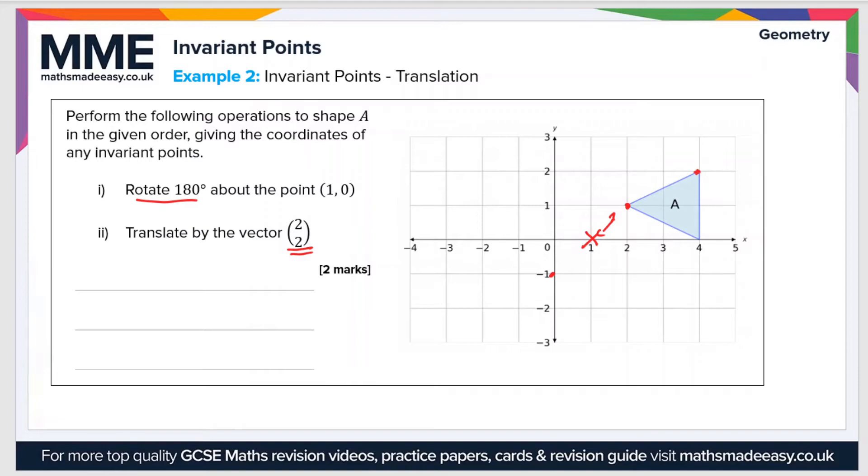And then we'll do the top right corner of shape A. So that's two squares up and it's three squares along from the center of rotation. So it'll be two squares down and three squares along in the opposite direction when we do the rotation.